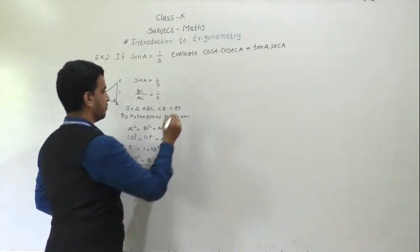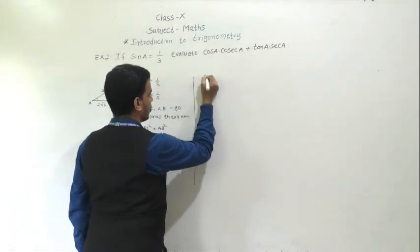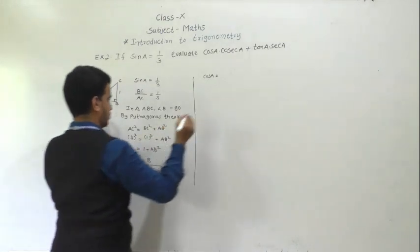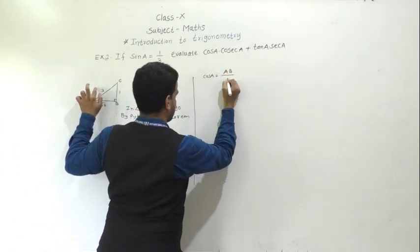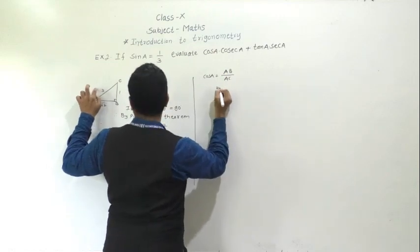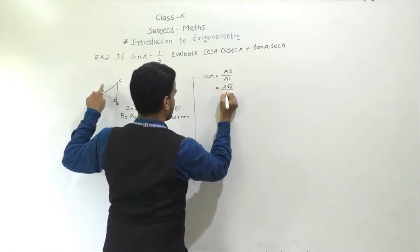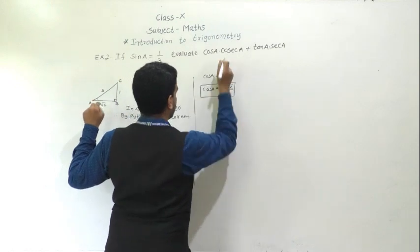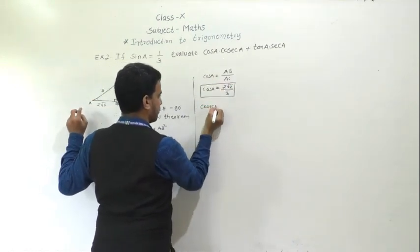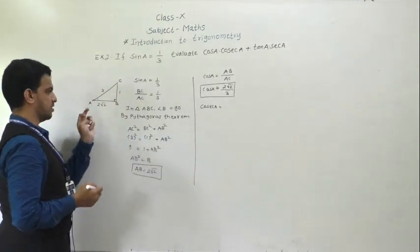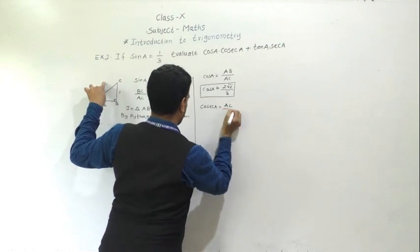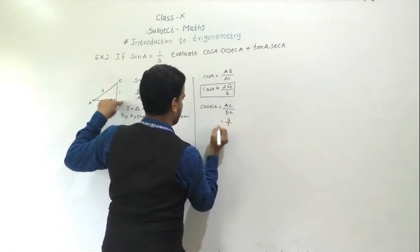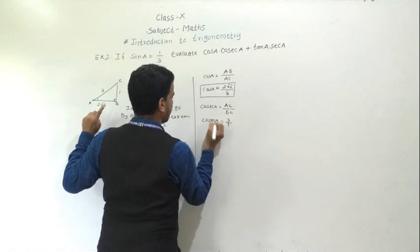Now find the required values. cos A equals adjacent side upon hypotenuse, that is AB by AC. So cos A equals 2√2 / 3. Cosec A equals hypotenuse by opposite side, that is AC upon BC, so 3 / 1 = 3.